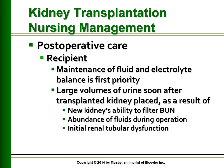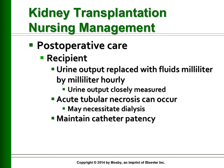Post-operative care in the recipient: maintenance of fluid and electrolyte balance is the first priority. Large volumes of urine soon after the transplanted kidney is placed occur as a result of the new kidney's ability to filter the BUN, the abundance of fluids during operation, and initial renal tubular dysfunction. Urine output during this phase may be as high as one liter per hour and gradually decreases as BUN and serum creatinine levels return toward normal. Urine output is replaced with fluids milliliter by milliliter hourly, so very accurate urine output measurement is essential.